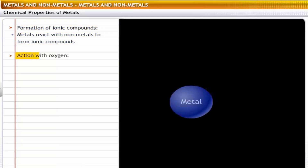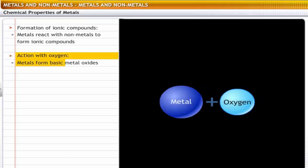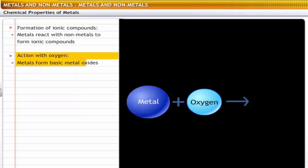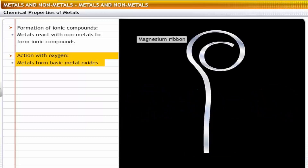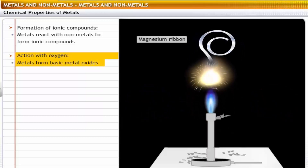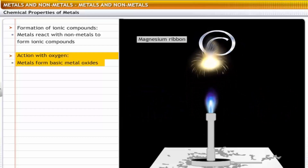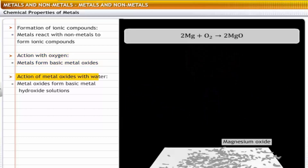Action of metals with oxygen: metals burn in the presence of oxygen to form metal oxides, which are basic in nature. For example, a magnesium ribbon burns in oxygen to form magnesium oxide.